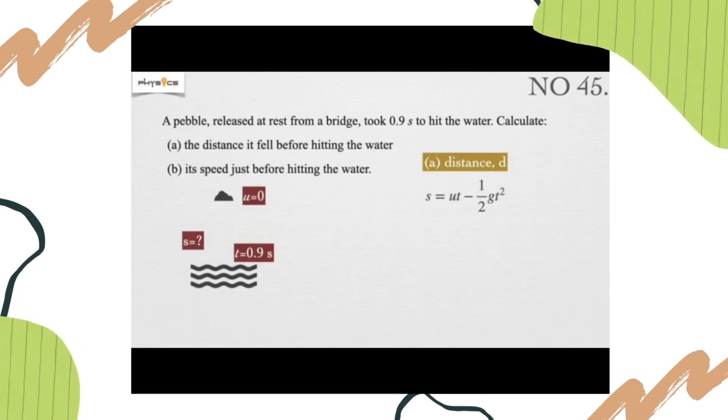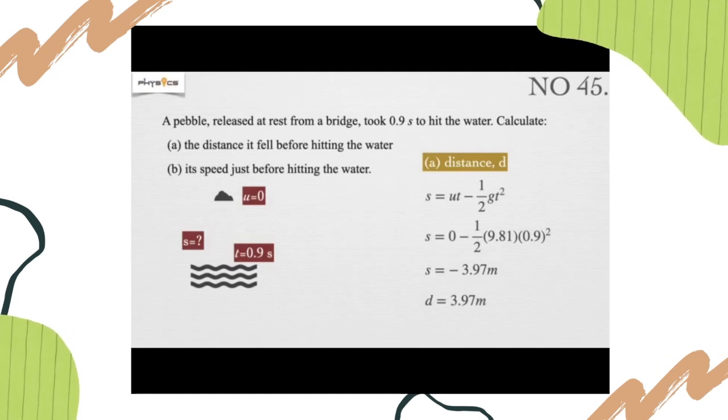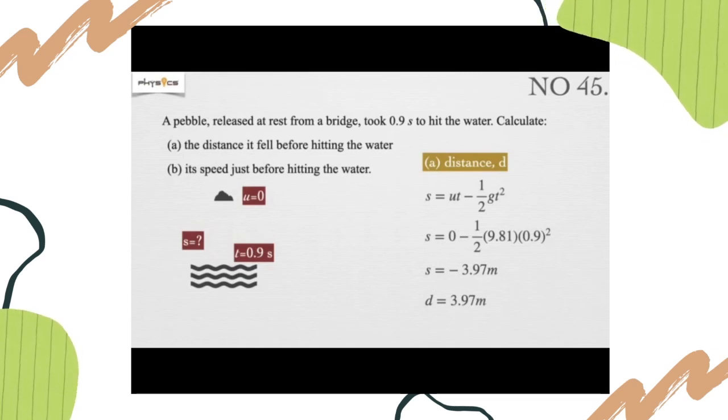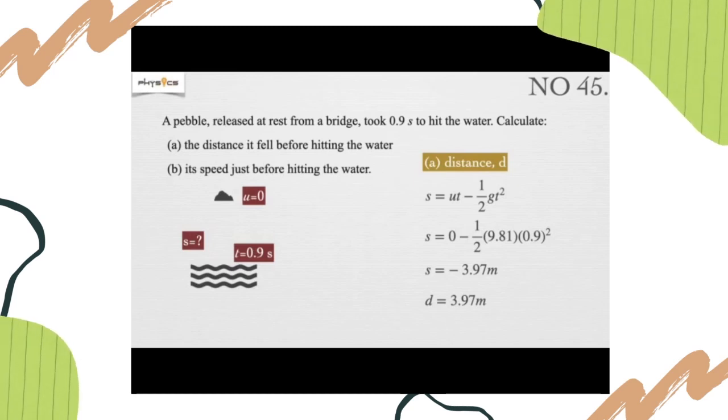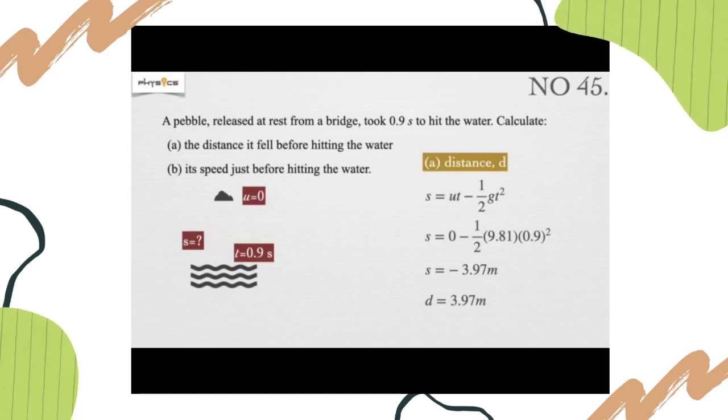Why is it negative? Because the direction is downwards. We get displacement equals negative 3.97 meters because displacement is a vector. The negative sign means that the direction is downwards. So the distance, which is scalar, is equals to positive 3.97 meters.